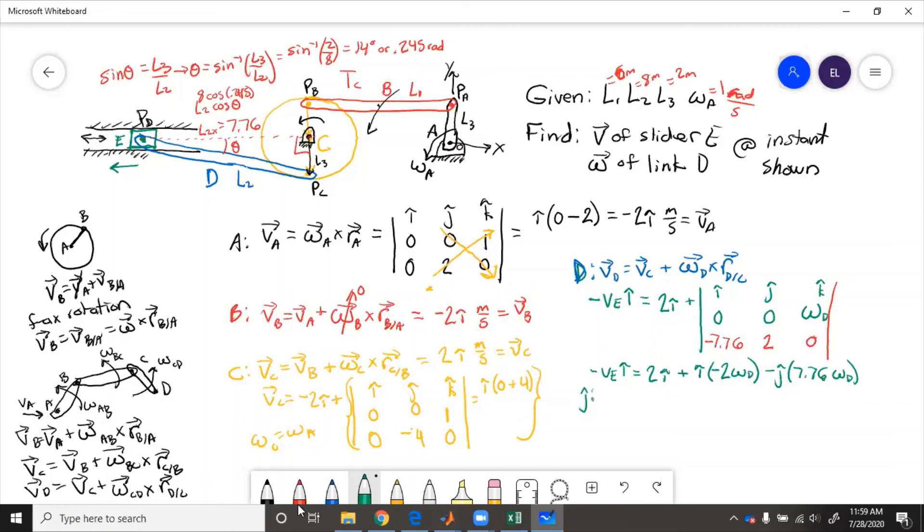So in the j, nothing on the left side equals j, so we just have 0 equals this thing on the right, negative 7.76 omega D, so then 0 equals omega D. So at this particular instant, angular velocity of link D equals 0. It's not always going to equal 0, in this particular instant shown, it does.